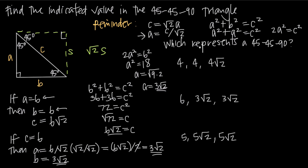Which of these represents a 45-45-90 triangle, given the three side lengths? First example: sides 4, 4, and 4 times the square root of 2. In a 45-45-90 triangle it's always isosceles, so two sides must have the same length. We can identify right away that the two sides equal to 4 are the legs. The third side must be the hypotenuse and must equal the leg times the square root of 2: 4 times square root of 2 equals 4 square root of 2. It does, so these three side lengths represent a 45-45-90 triangle.